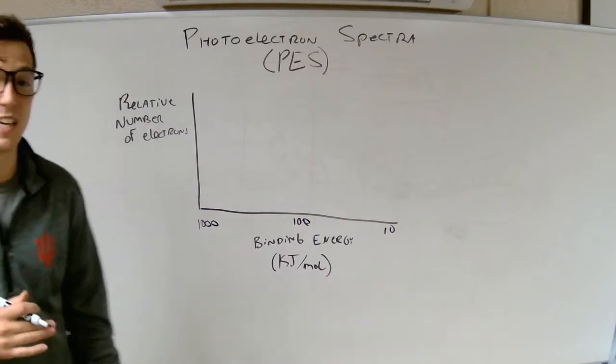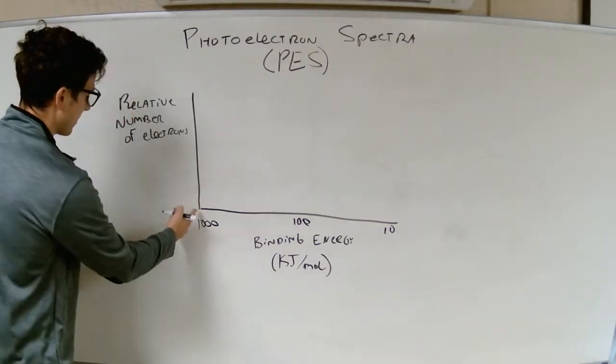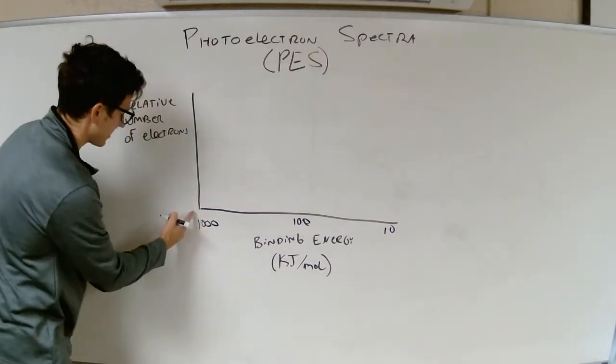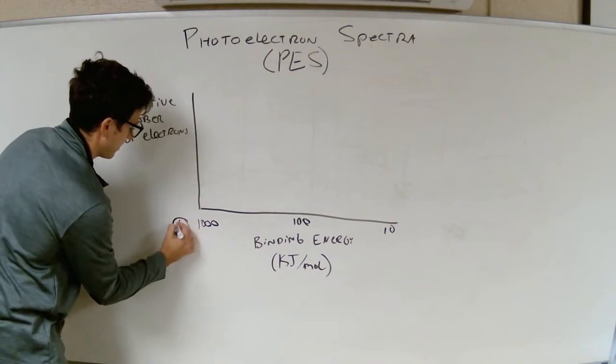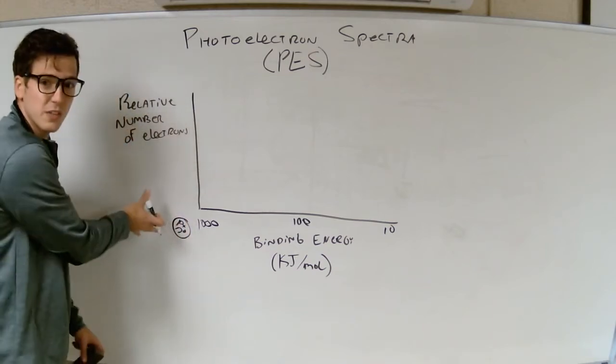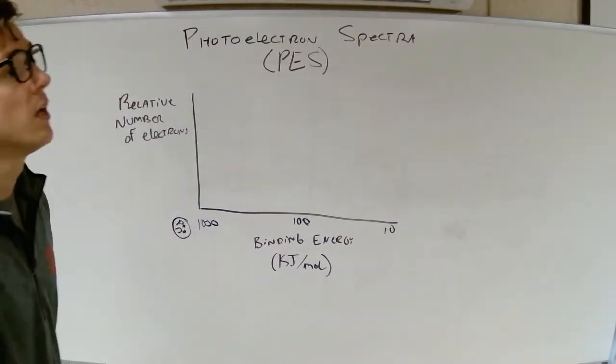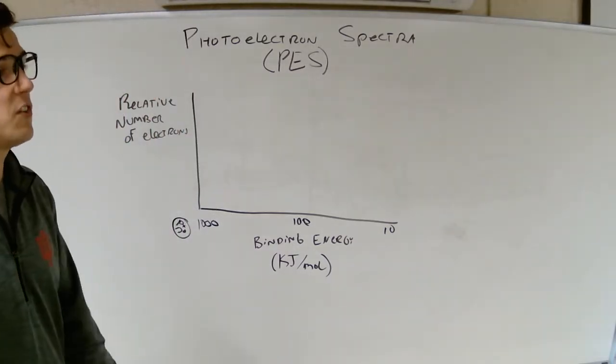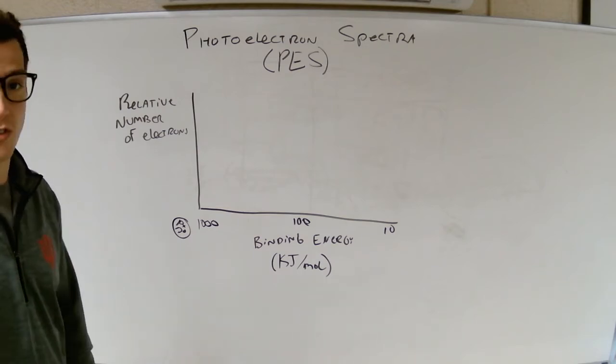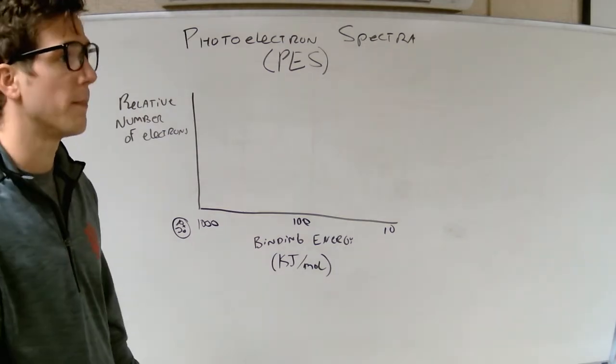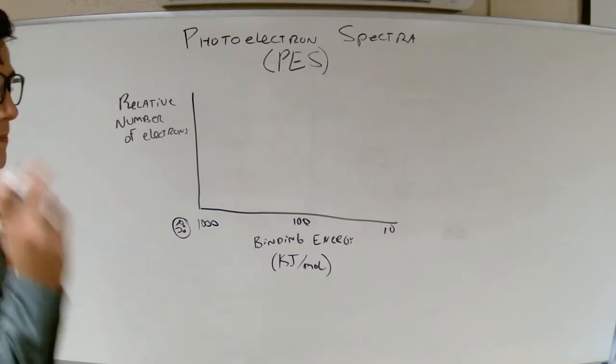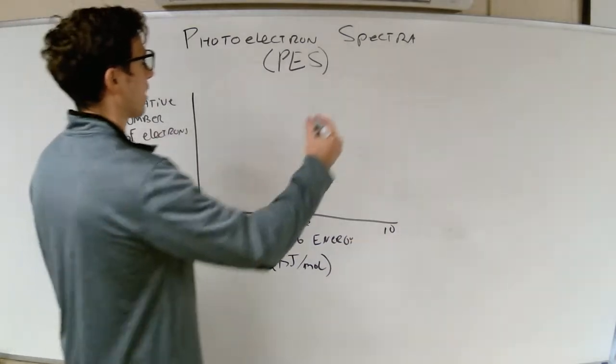And what you need to think about is that down here in the corner, this is like where our nucleus is at. So our nucleus is down here, and you'll see what I mean here in a little bit. So, let me just give you the electron spectra of a few elements, and we'll go from there. So, what we'll do, we'll go with carbon.